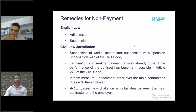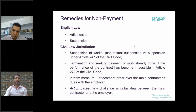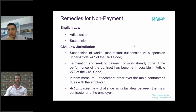The adjudication process is implied in construction contracts in England, Wales and Scotland and is compulsory. The decision of the adjudicator is binding on the parties and can be enforced by the courts in the interim until the dispute is ultimately determined by the courts or through arbitration. In short, it provides a swift remedy for contractors, subcontractors and further down the supply chain for non-payment from those immediately above them.